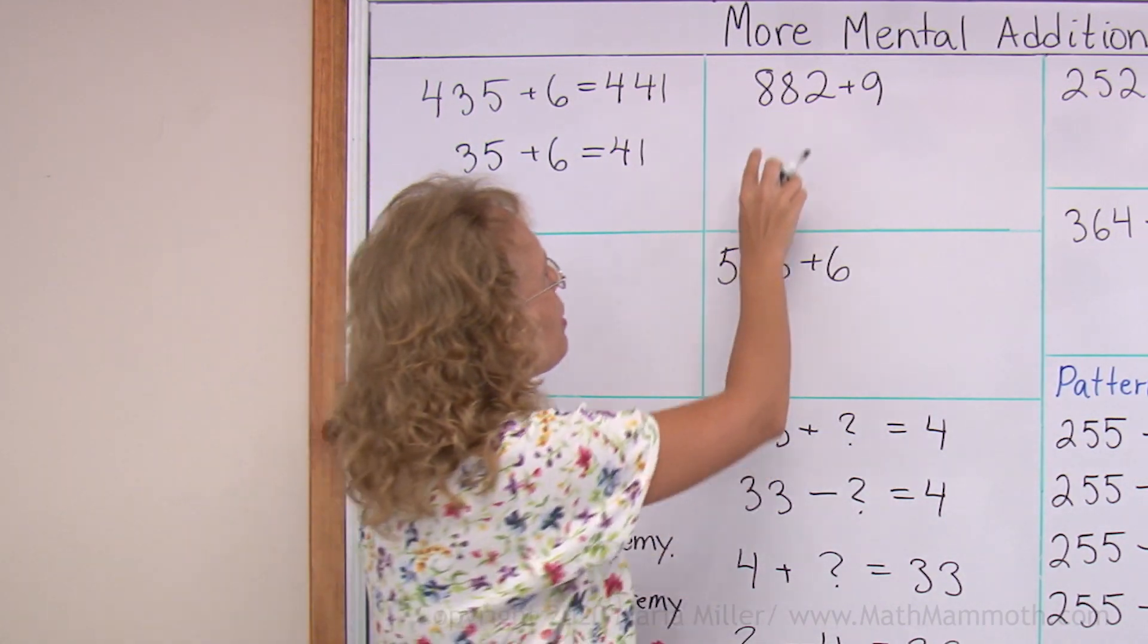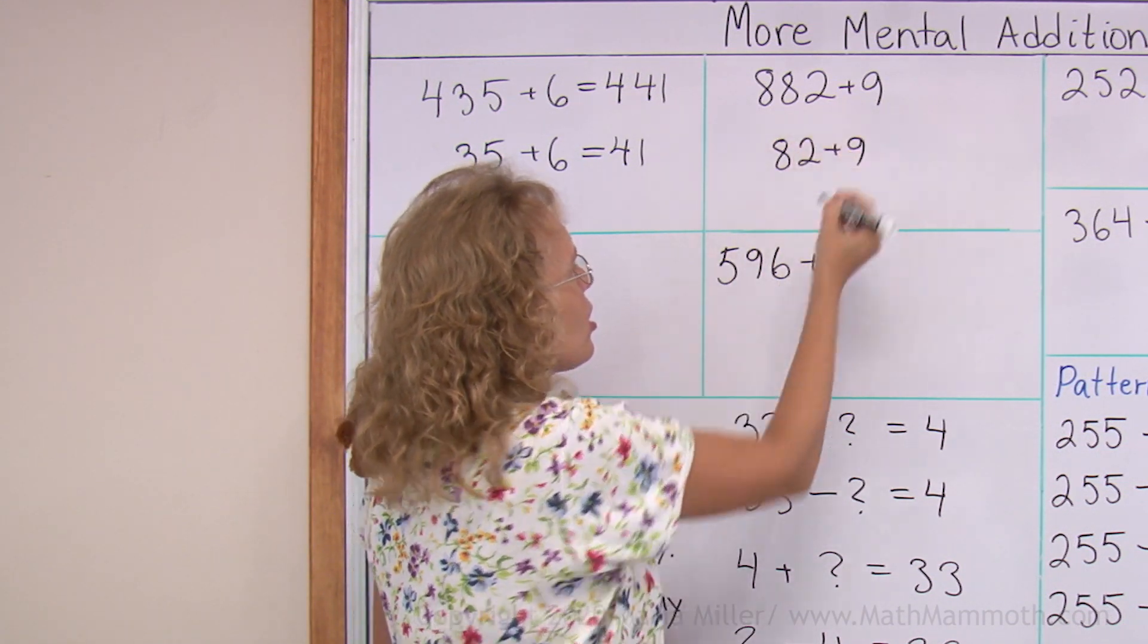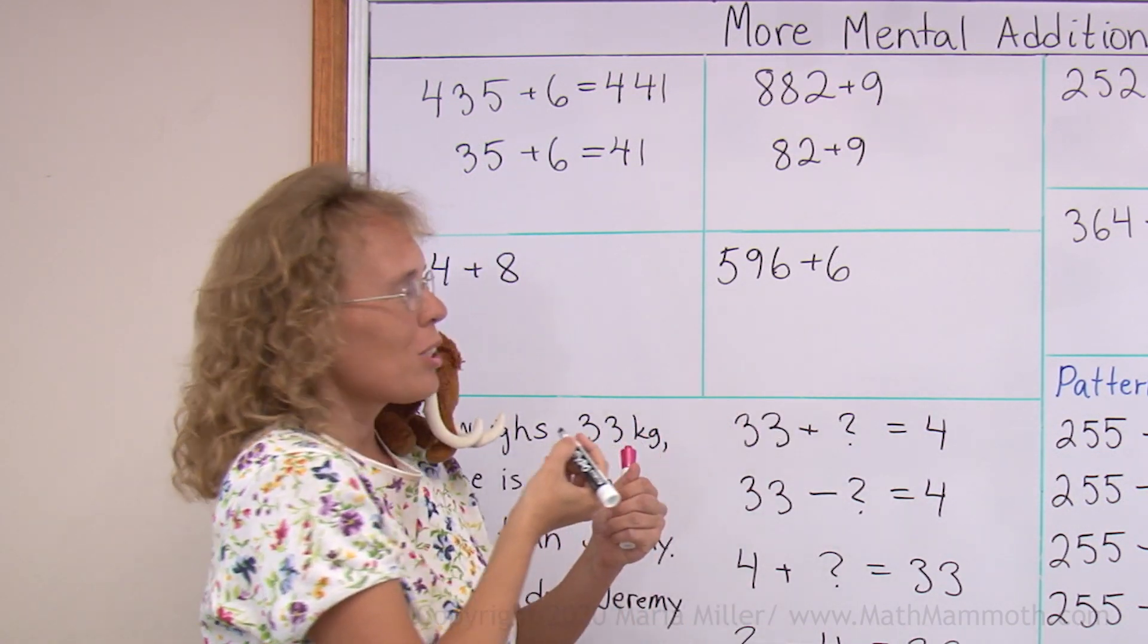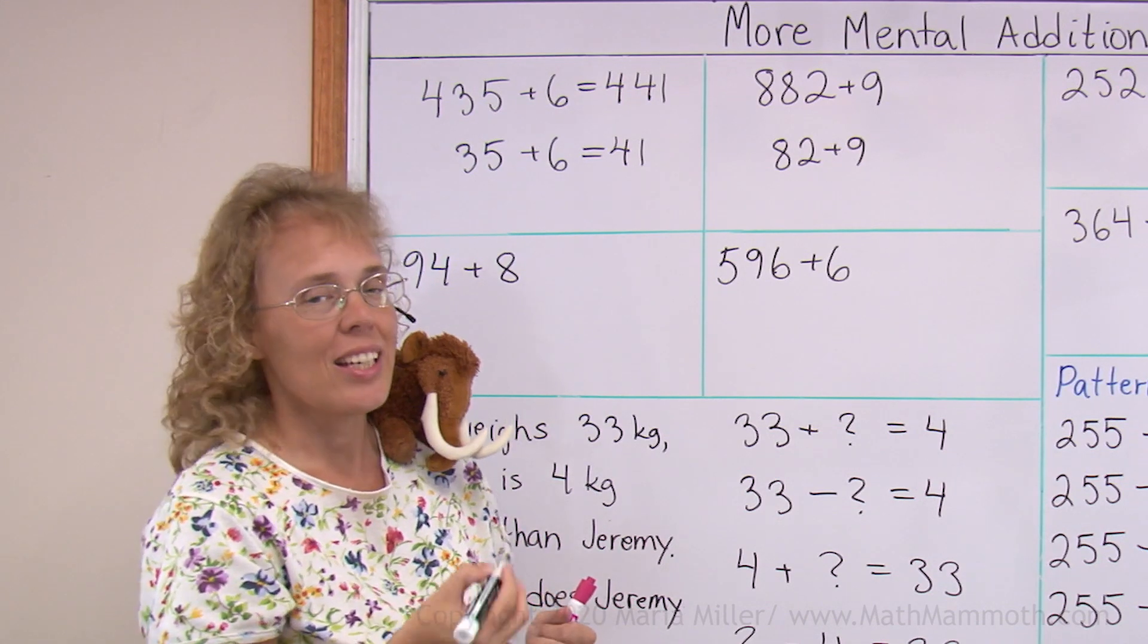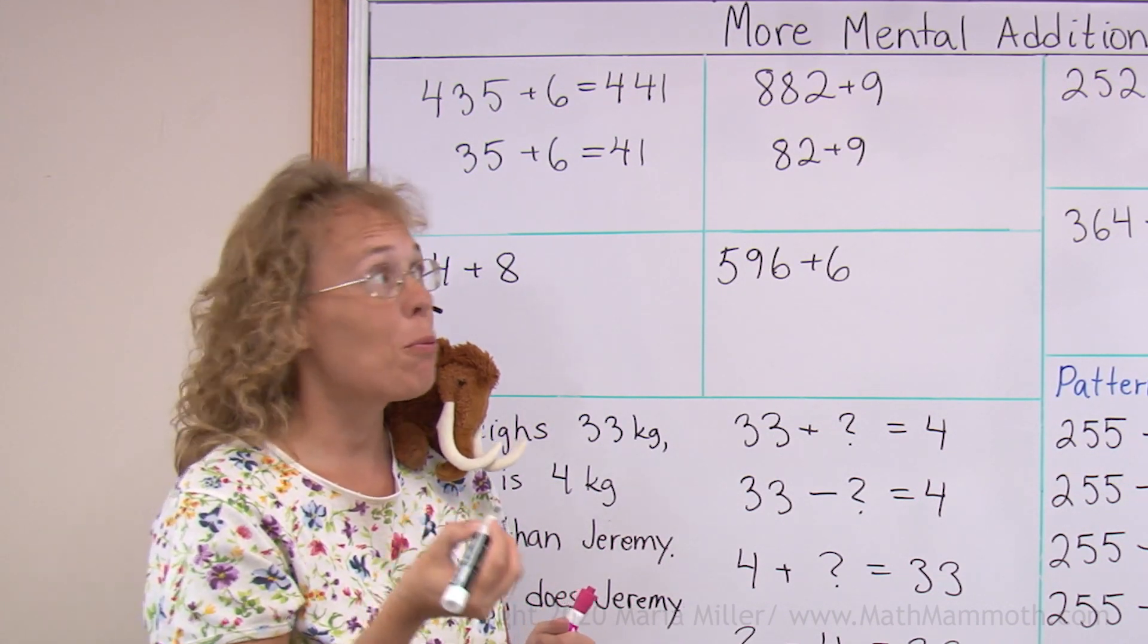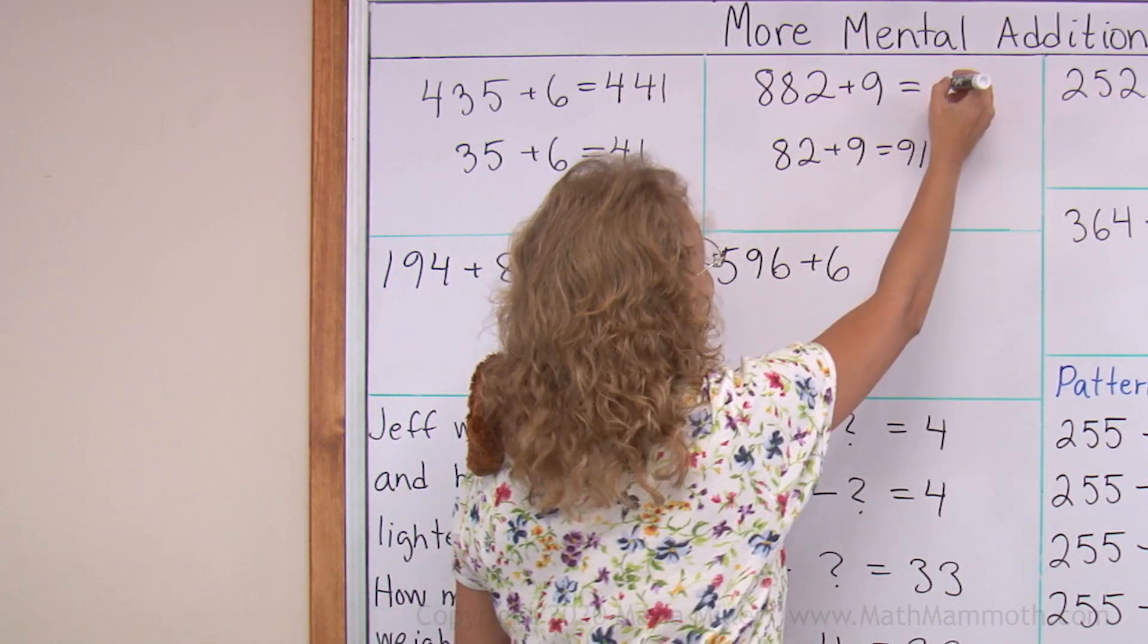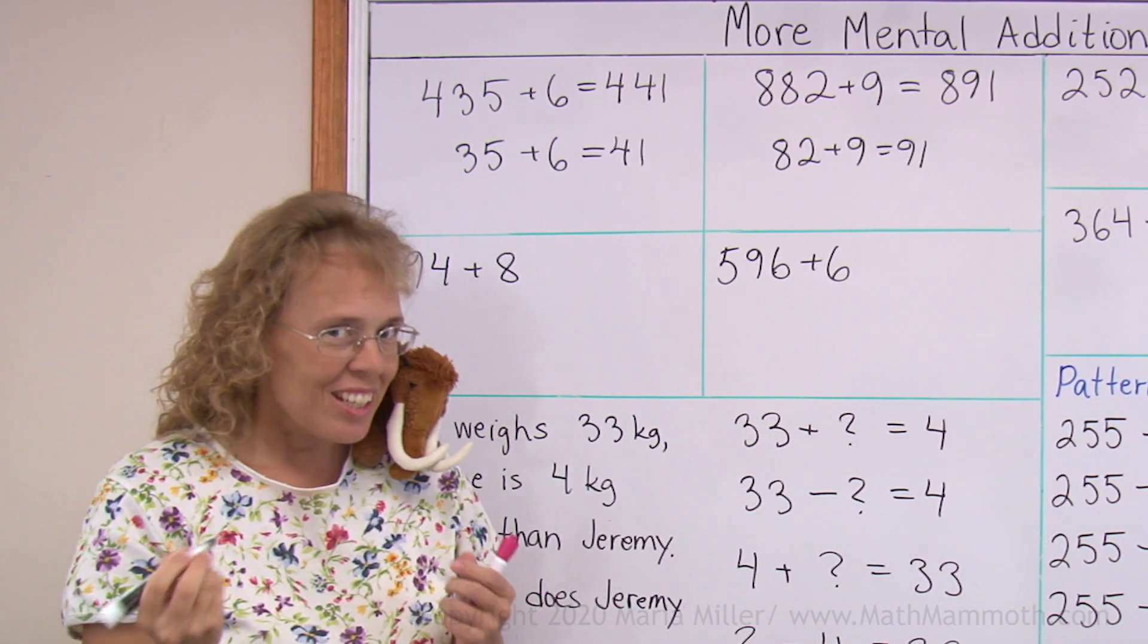Let's try this one too, 882 plus 9. Just take the 82 plus 9, solve that. And that's almost 82 plus 10, which would be 92. It's one less than that. So it's 91. This one here is then 891. That's pretty easy, right?